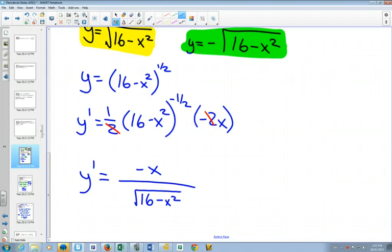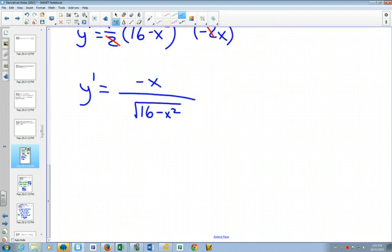What I want you to notice when we did this is that what's on the bottom is the same as y in what we started with. Can you see that what's on the bottom of my fraction is the same as the original y? So I could technically write this as negative x over y, because that's what it's equal to to begin with.